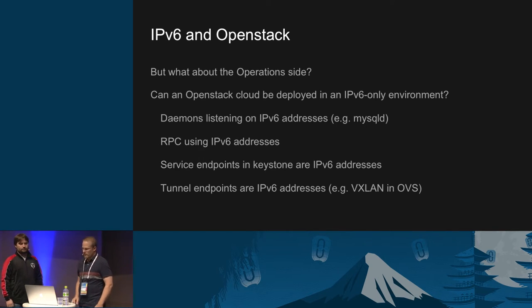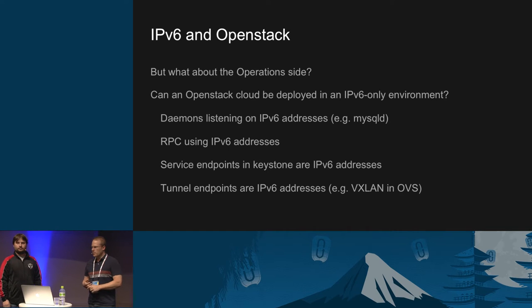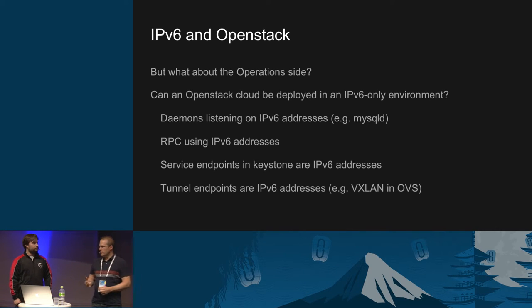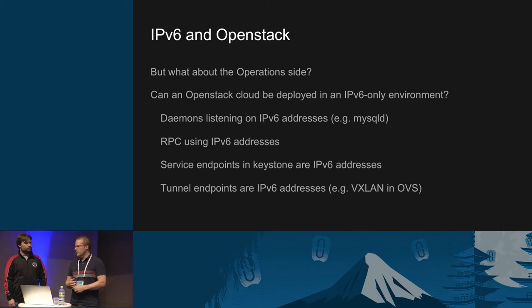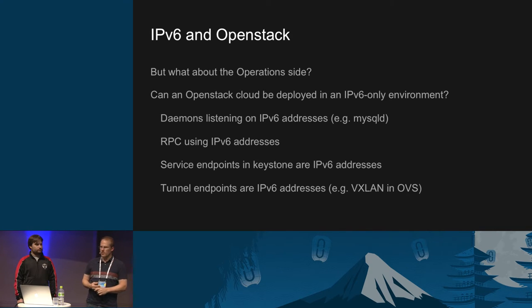But there's another side to IPv6-only in OpenStack Cloud, and that is the operations side. Can we deploy an OpenStack Cloud in an IPv6-only environment? By this, I mean that all our daemons are running over IPv6, all the RPC message queues are running over IPv6, all the endpoints in Keystone are IPv6 addresses, as well as all the tunnels. So if we're running with OVS and VXLAN, all those tunnels are going up over IPv6 as well.